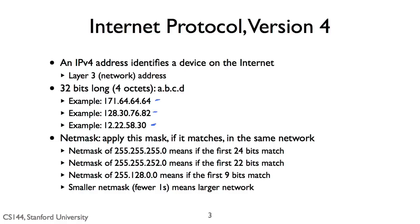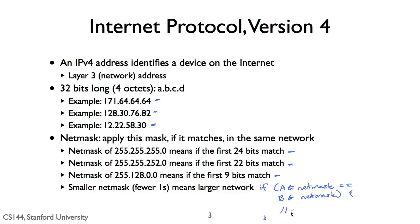A net mask is written as a string of consecutive ones, starting with the most significant bit. A net mask of 255.255.255.0, for example, means the first three octets are all ones (2 to the 8th minus 1 is 255), and the last octet is 0. This means that an IP address which matches the first three octets — 24 bits — of your IP address is on the same network. A net mask of 255.255.252.0 means that net mask is 22 bits long, while 255.128.0.0 is a 9-bit net mask. You can tell whether two computers are in the same network by taking a bitwise AND of their addresses with the net mask — if the resulting addresses are equal, they are in the same network.